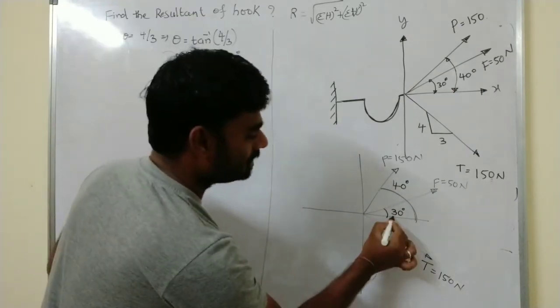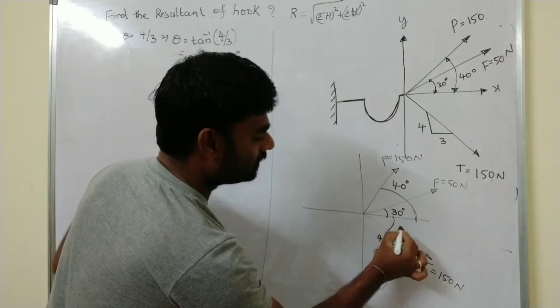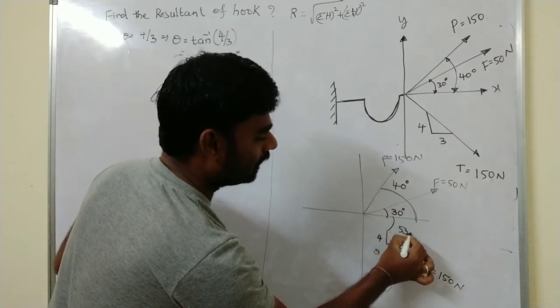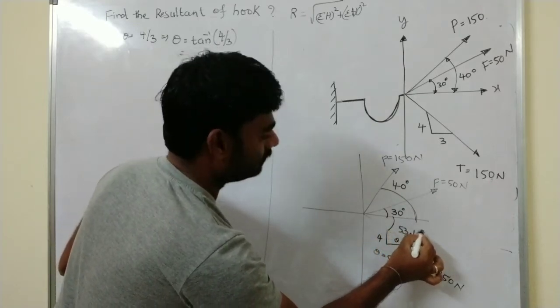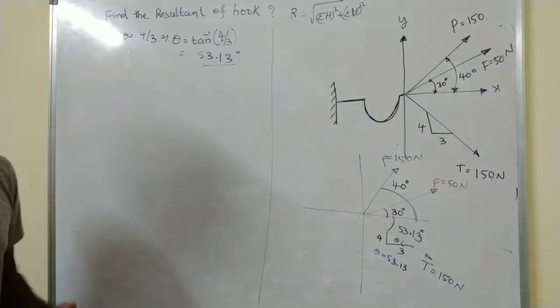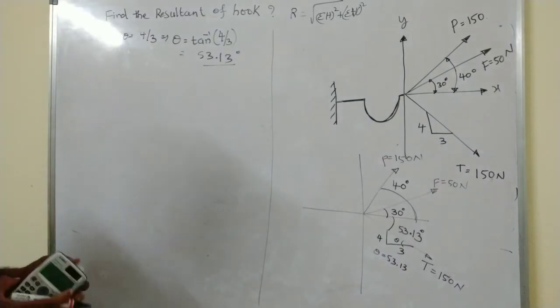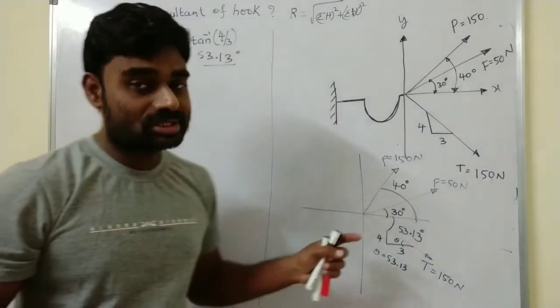Theta equals 53.13 degrees. Since opposite angles are the same, take this angle as 53.13 degrees.